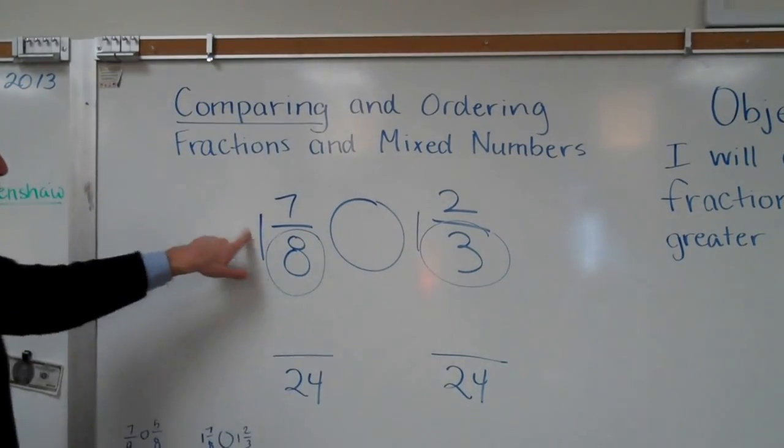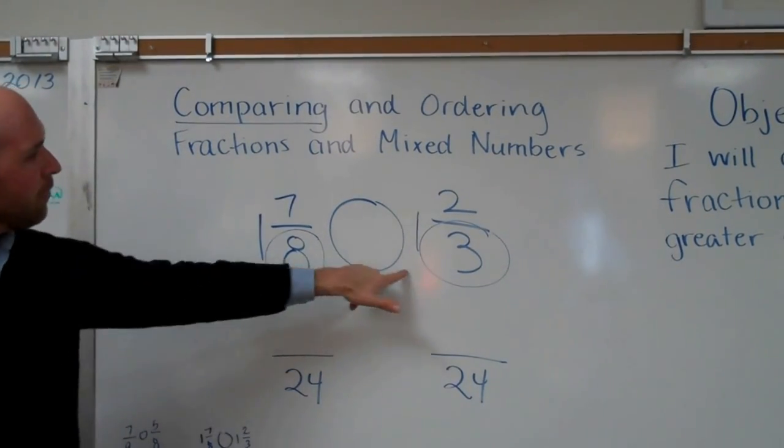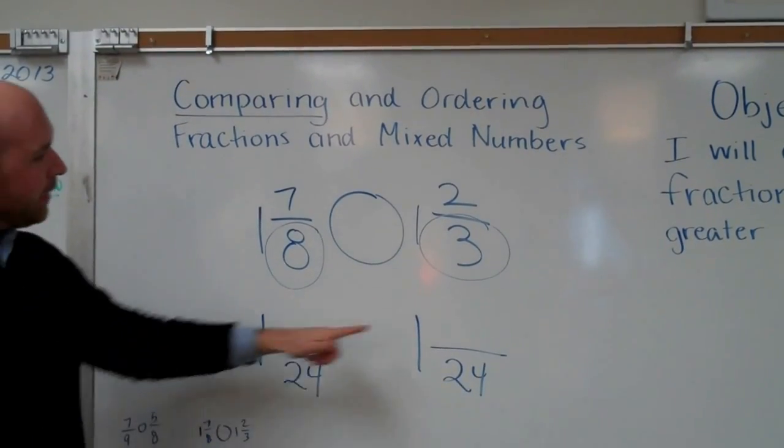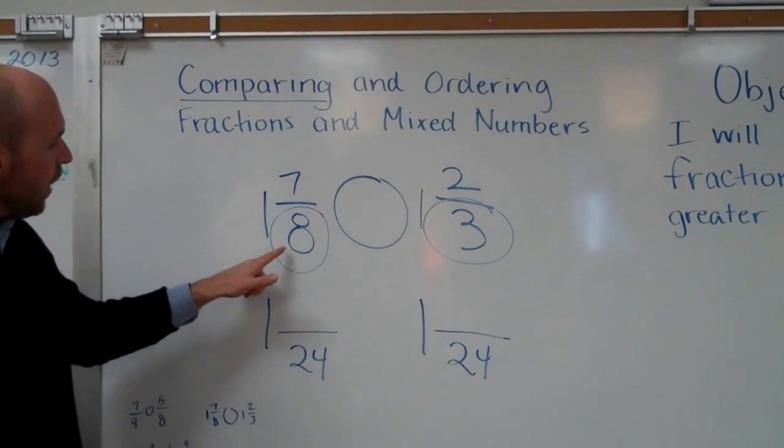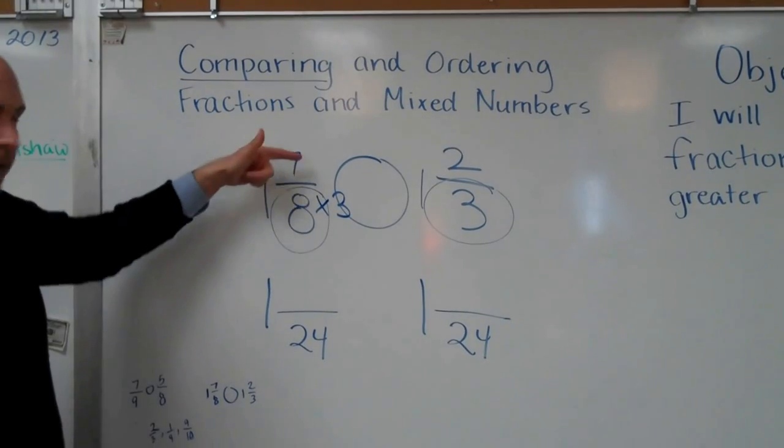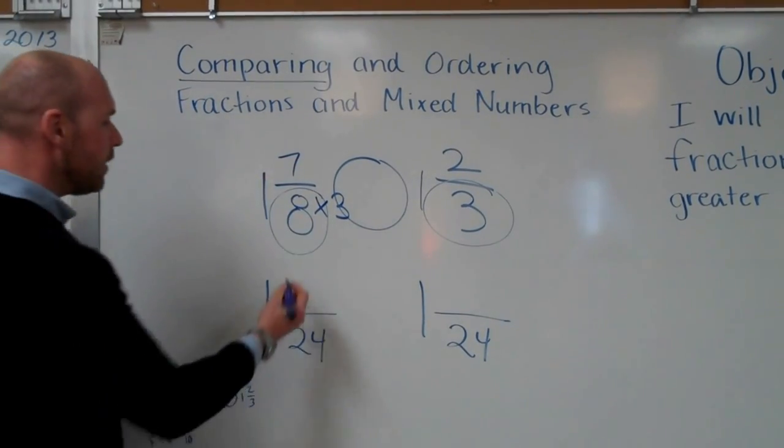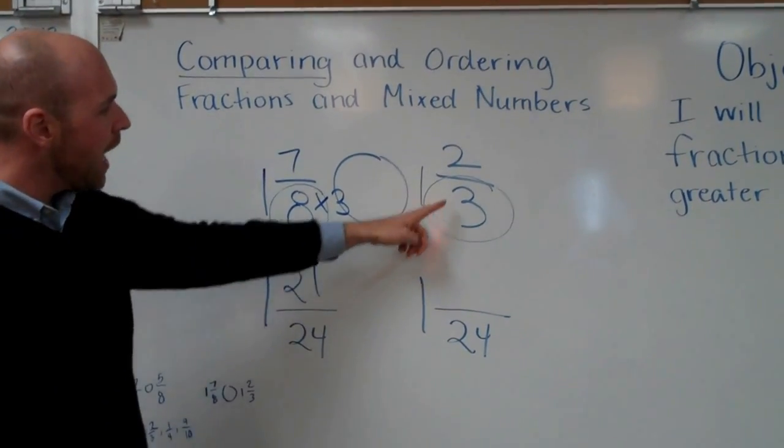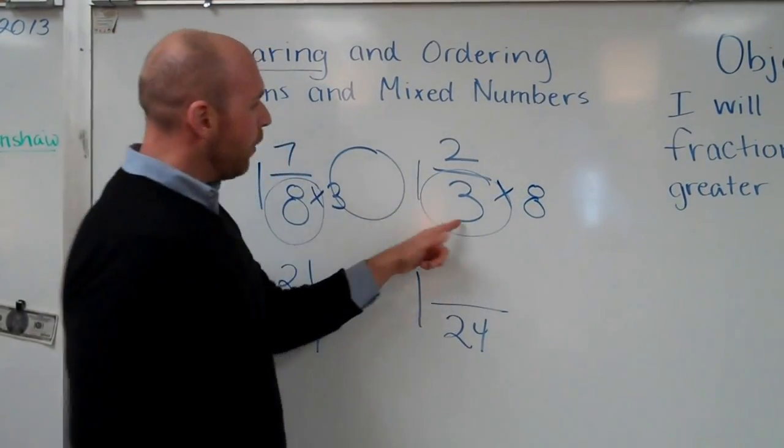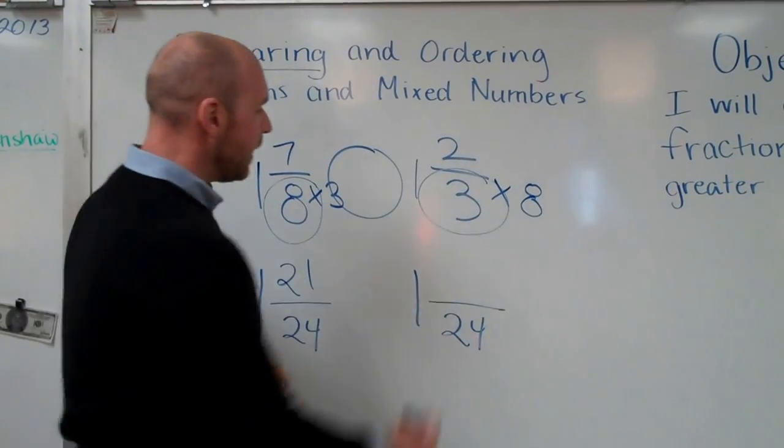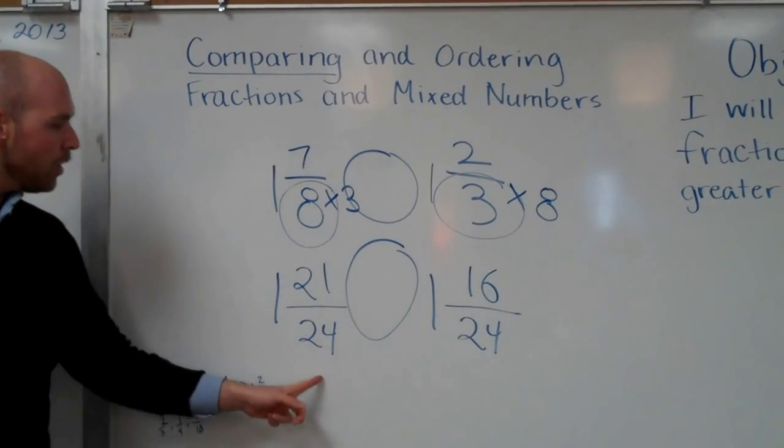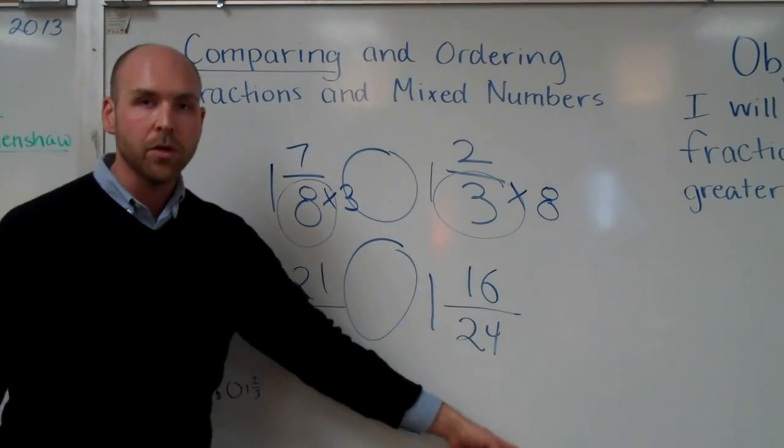Alright. Twenty-four. So my whole number of my mixed number is the same. So that's no big deal. But now I can compare easily. So how do I get from eight to twenty-four? Times three. What I do to the bottom, I do to the top. Seven times three is twenty-one. I'm going to go over here. How do I get from three to twenty-four? Times eight. What I do to the bottom, I do to the top. Two times eight is sixteen.